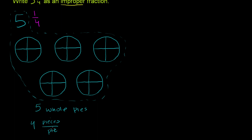4 pieces per pie. 4 pieces per pie. 4 pieces per pie times 5 pies is equal to 20 pieces. Or another way to think of it, since each piece is a fourth, this is also equal to 20 times 1/4. Or you could just write this as being equal to 20/4.